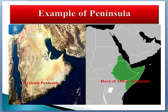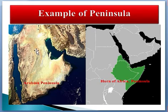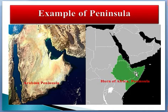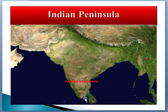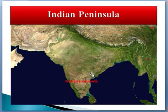Examples of a peninsula: the Arabian Peninsula is the world's largest peninsula. The Horn of Africa is also a peninsula. The Indian Peninsula, also known as the Deccan Peninsula, is a portion of land surrounded by water from three sides but connected to the mainland on one side.